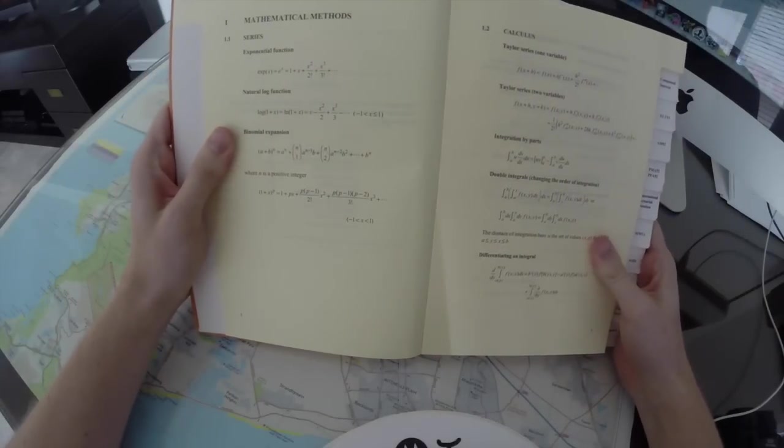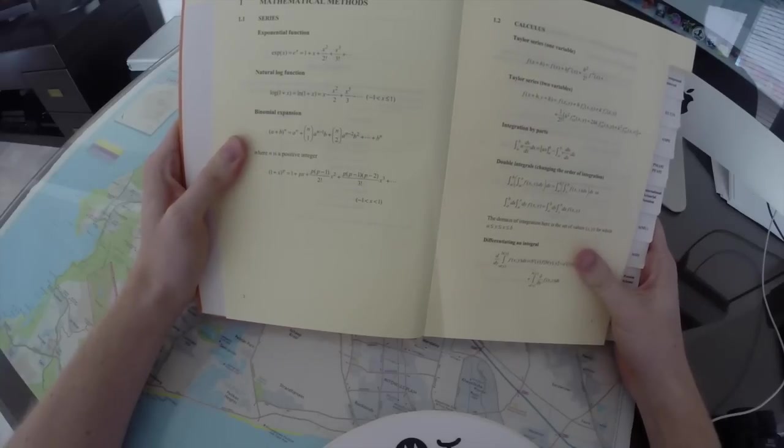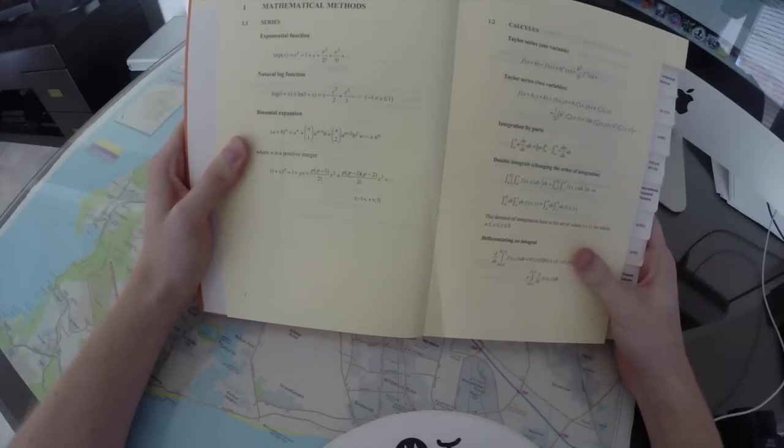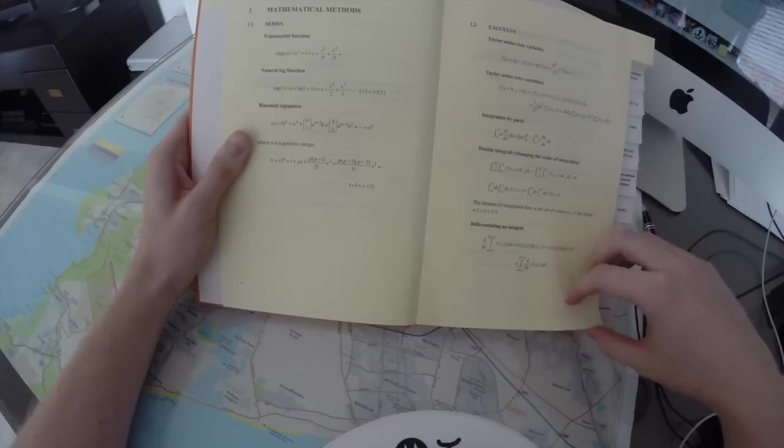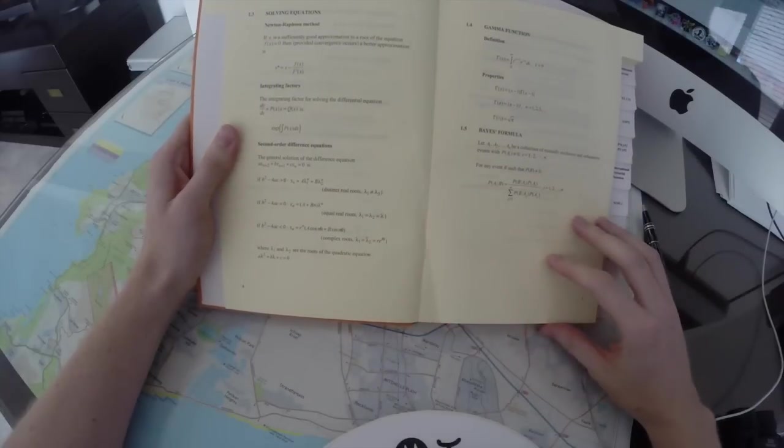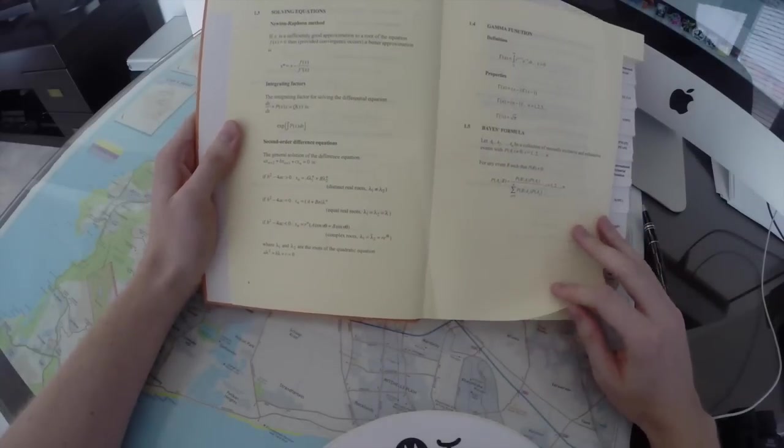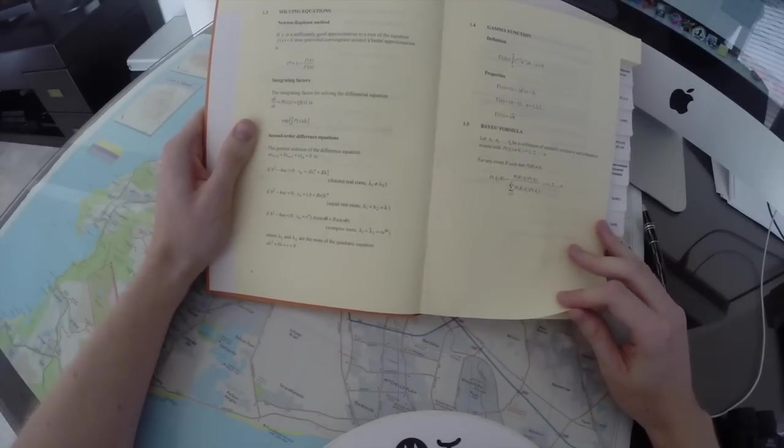As you can see, we start off with mathematics. You need to know exponential functions, natural log functions, binomial expansion, Taylor series, integration by parts, double integrals, differentiating an integral. Then there's Newton-Raphson's method, integrating functions, second order differential equations, gamma functions, Bayes' formula.